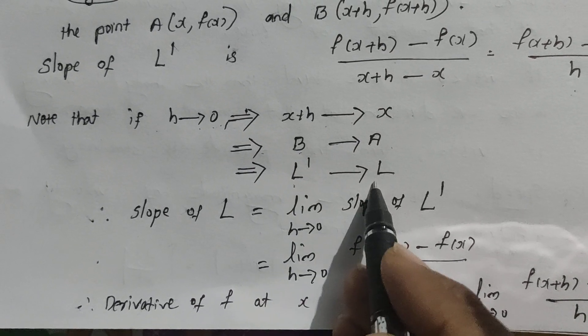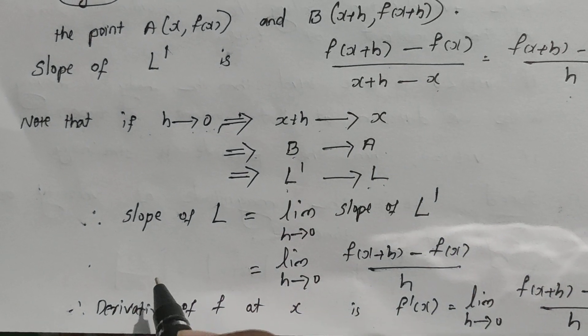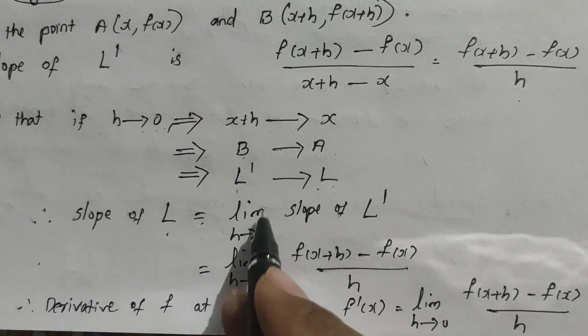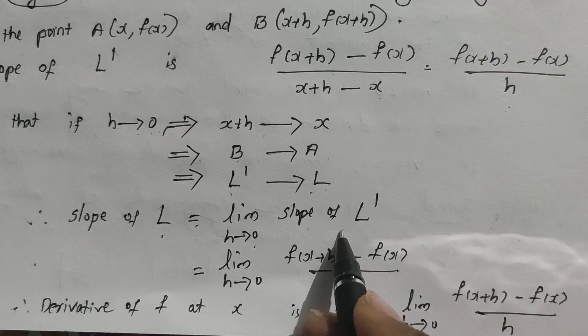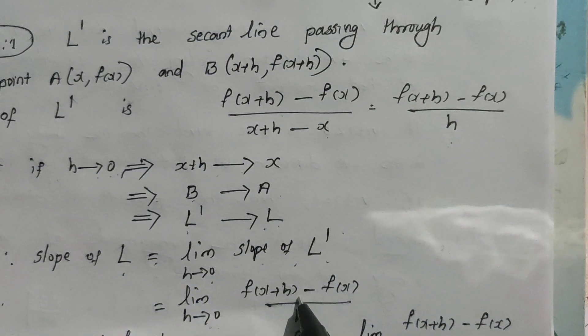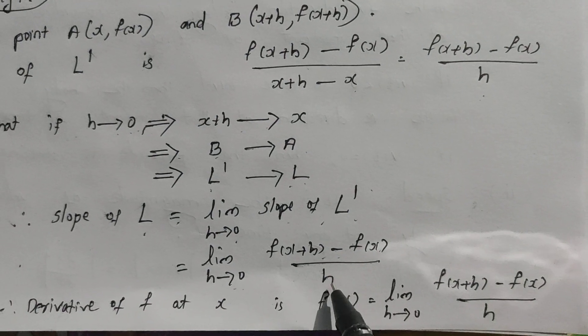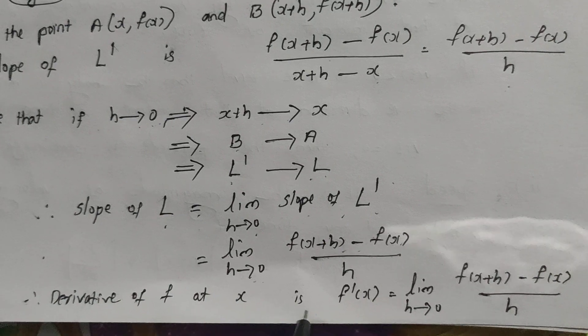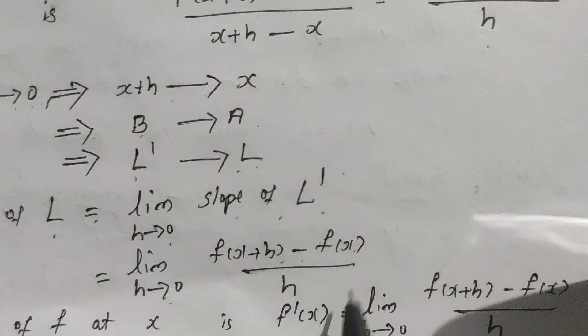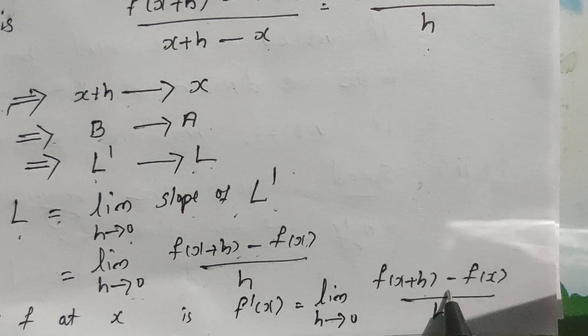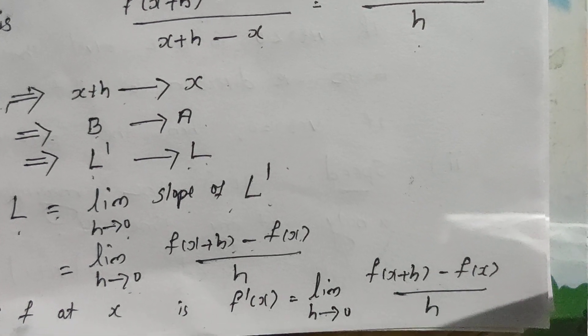Therefore, the slope of our tangent line equals lim(h→0) [slope of secant line], that means lim(h→0) [f(x+h) - f(x)]/h. So the derivative of f at x is defined as f'(x) = lim(h→0) [f(x+h) - f(x)]/h.